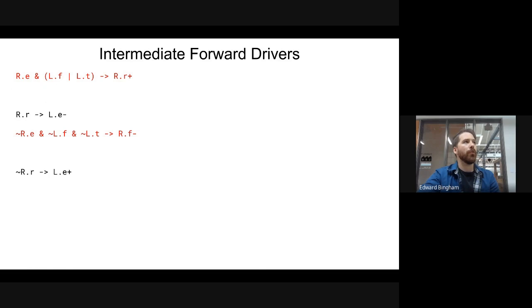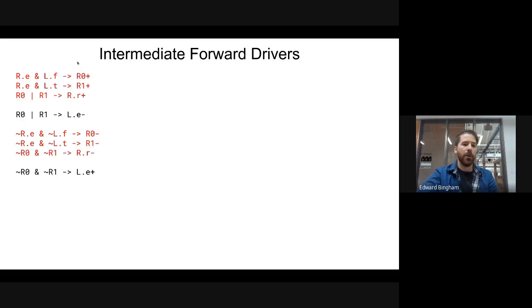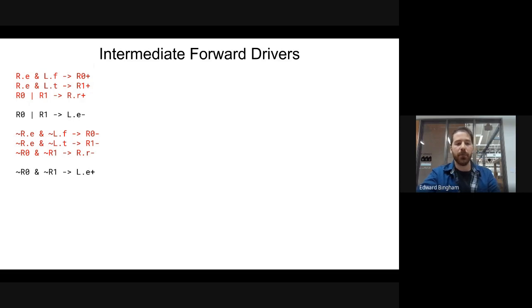We've also seen intermediate forward drivers. If you have a complex expression for a forward driver, or logic that you need in memory that doesn't match the logic for your forward drivers, you can break your forward drivers apart and have intermediate forward drivers that are then combined to form an outgoing request. You're adding more state-holding elements — this is expensive in area — but it allows you to pack more logic into the handshake overall, and maybe allows you to work with an internal memory that is more efficient in energy or faster.